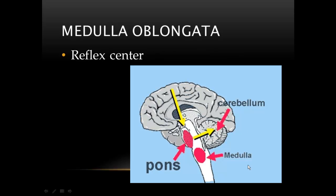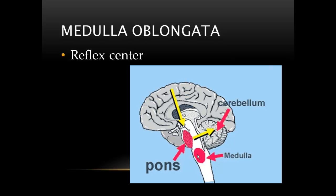Medulla oblongata, it is part of the brainstem, so as your nerve impulses come up through the spine, in this brainstem here, there's this little bulge at the top, we call this the pons. Right below the pons is the medulla oblongata, reflex center. So blinking, swallowing, heart rate, breathing rate, all these things are controlled by this part of the brain.